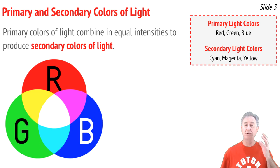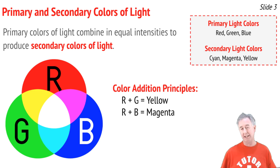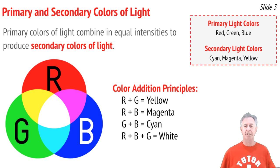In our last video, we talked about the primary colors of light. These are the three colors of light that our eyes are most sensitive to, so we refer to them as the primary colors. When you mix them together in equal intensity, you get white light. But if you mix just two of them in equal intensity, you'll get what we call secondary colors of light. Mixing red and green gives yellow; red and blue gives magenta; blue and green gives cyan.